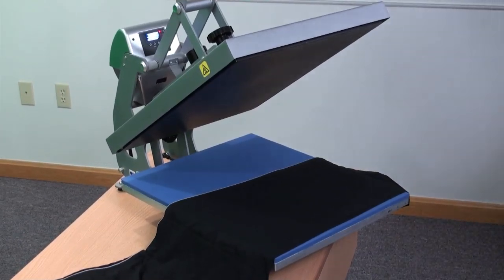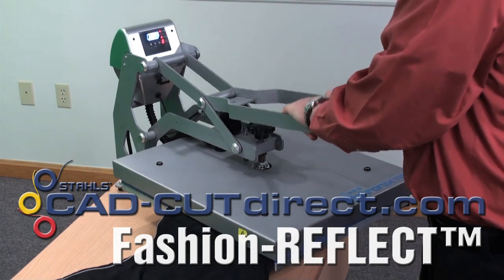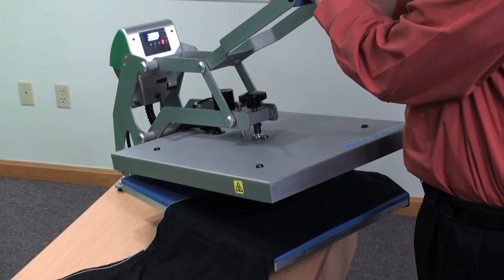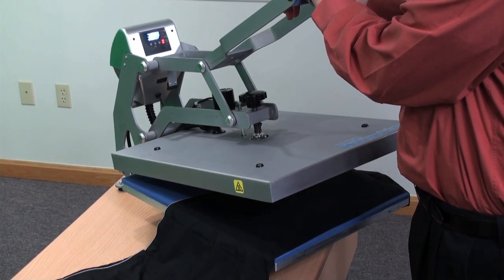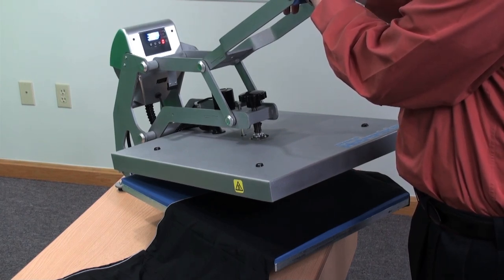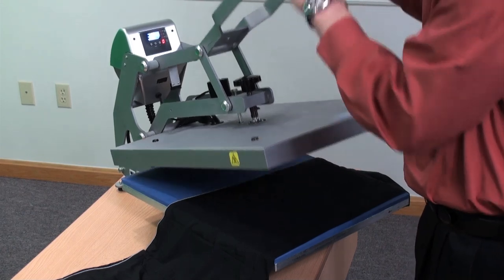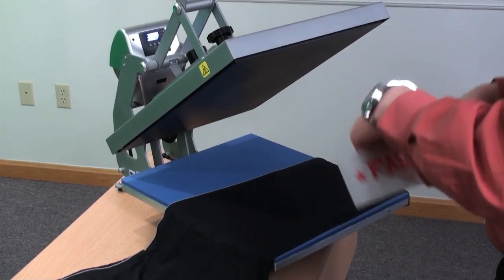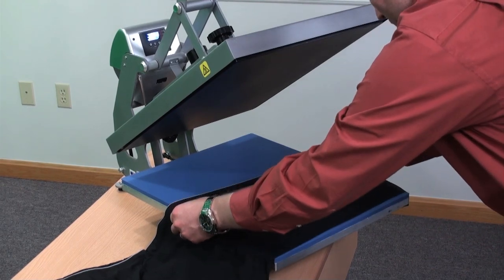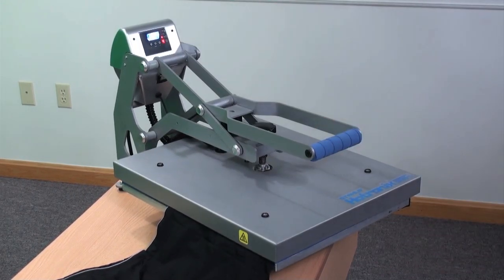Next we'll heat apply the Fashion Reflect. First preheat your garment to remove the moisture and wrinkles. This particular material applies at 305 degrees in 2 steps, 5 seconds, peel warm, and then 5 seconds again, all at a pressure of 4 on the Hotronix Clam or a light to medium pressure. Position the design. Press for the initial 5 seconds.